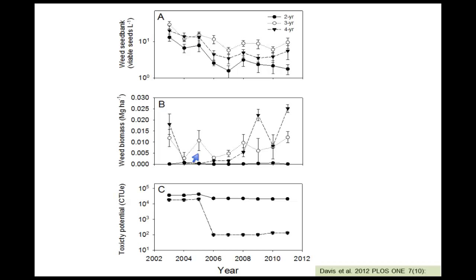Looking at data over time, the weed seed bank was going down at the same rate in all three systems. Weed biomass was negligible — to give an idea, corn yields were 14 megagrams per hectare, and we were down at 0.005 to 0.02 megagrams per hectare of weed biomass. Basically, we had to search on our hands and knees for weeds. We had so few weeds in this field.